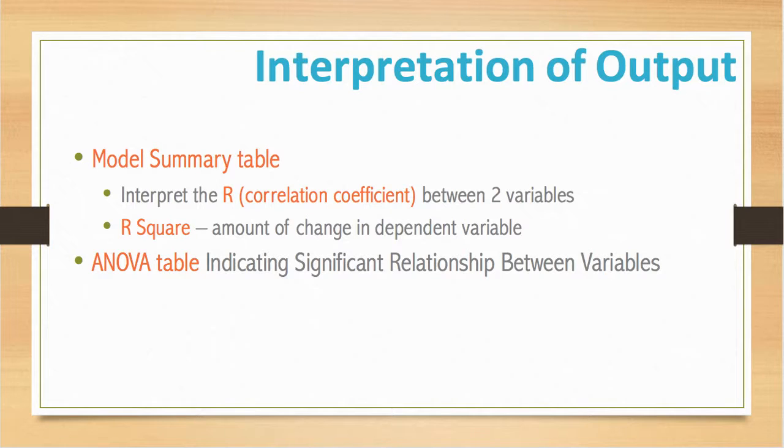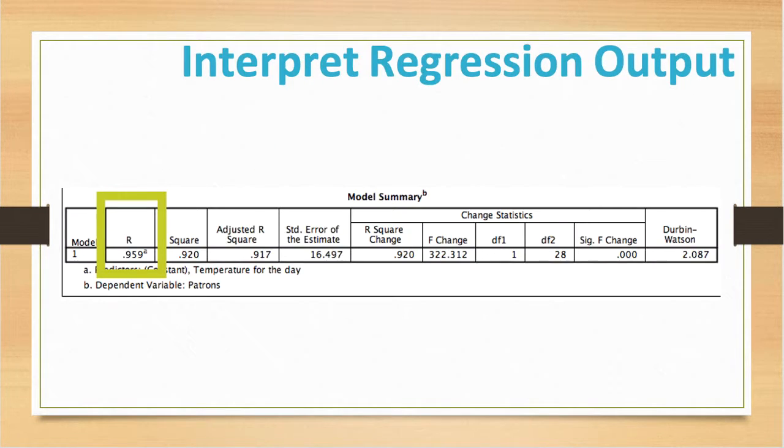The model summary table provides the value of R and R squared for the model that has been defined. R is your correlation coefficient between the two variables. In this case, the correlation is between the temperature that day and the number of patrons that attended the pool. It is very high at .959.